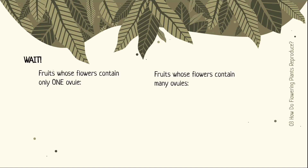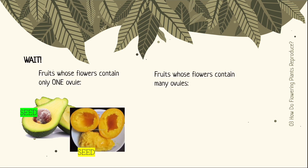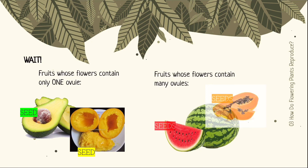Can you name some fruits whose flowers only contain one ovule? Some of these fruits are avocados and mangoes. Avocados have a large seed while mangoes have a large flat seed in the centre. As they only have one seed each, this means they only had one ovule in each of their flowers. Fruits whose flowers had many ovules include watermelon and papaya — look at how plentiful the seeds are in these fruits, meaning their many ovules had been fertilised.